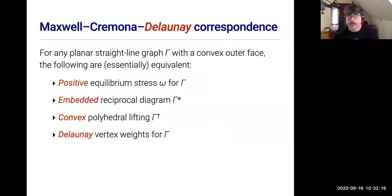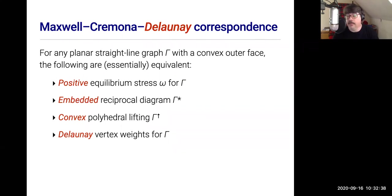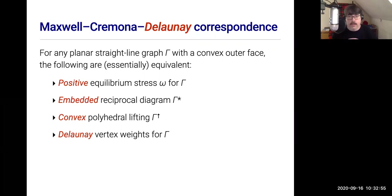So we get the Maxwell-Cremona-Delaunay correspondence: for any planar straight-line graph with a convex outer face, the following are essentially equivalent — a positive equilibrium stress implies an embedded reciprocal diagram of the dual graph, implies a convex polyhedral lifting, implies that you can assign vertex weights so that the graph is the weighted Delaunay complex of those weighted points. Given any one of these four things, you can get all four.